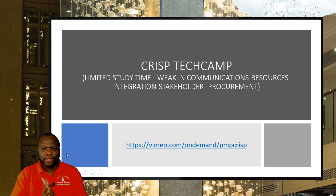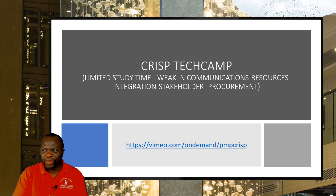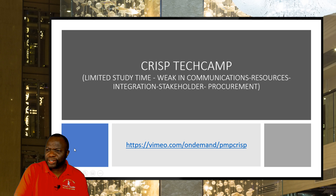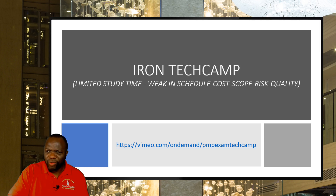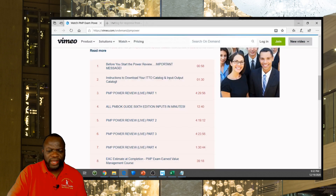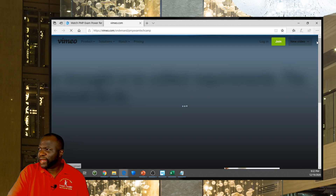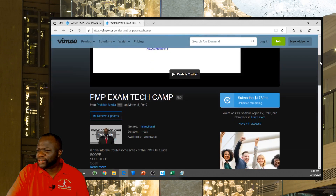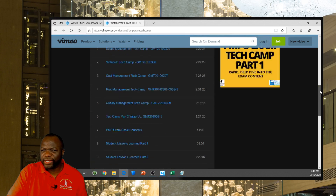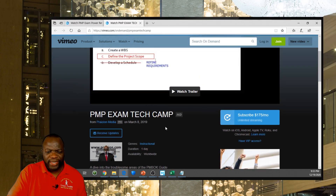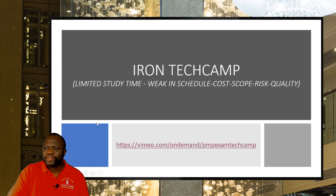The third link is the crisp tech camp. If you have limited time and you're weak in communications, resources, integration, stakeholder, and procurement, that is the package you need to get — just hit the link and go there. The next one is the iron tech camp. If you've got limited study time and you're weak in schedule, cost, scope, risk, and quality, you want to go to that one. The iron tech camp duration is 24 hours — a treasure trove of content to help you master the more technical areas of your exam.